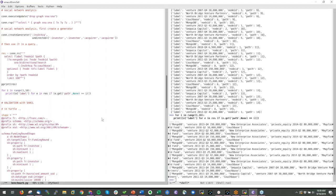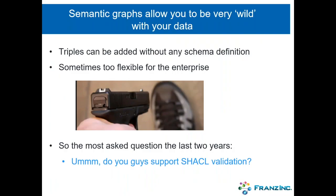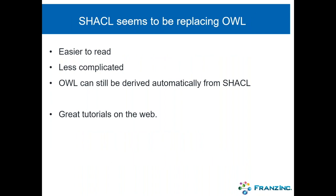That's all I wanted to show for JSON-LD as a mechanism for CRUD. Now let's go to SHACL. Semantic graphs allow you to be very flexible with your data — triples can be added without any schema definition. You could say 'John likes pizza, pizza made in Oakland, Oakland part of Germany' and the graph database doesn't care. But most enterprises find that too flexible. The most asked question we got in the last two years was: do you support SHACL validation?